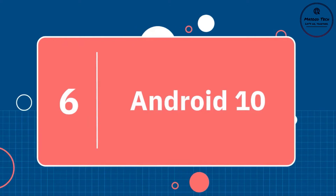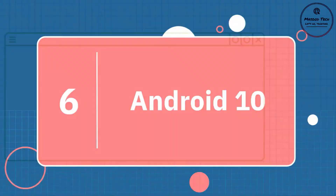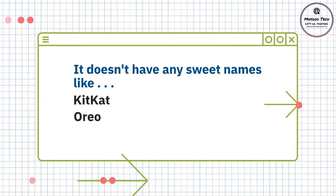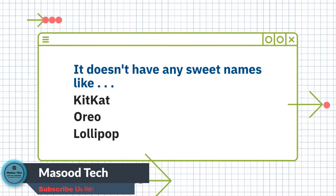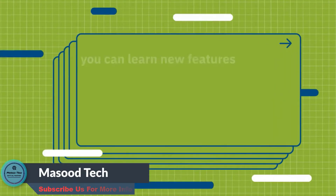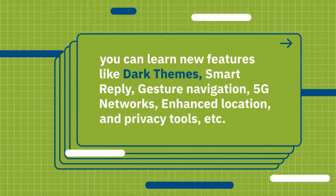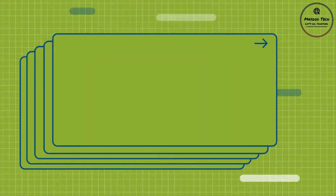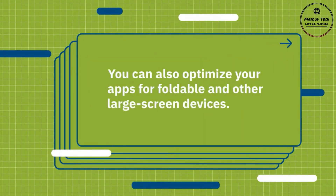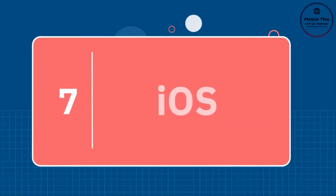Number six: Android 10. This is the latest version of the Android platform, released in September of last year. Unlike previous Android versions, it doesn't have a sweet name like KitKat, Oreo, or Lollipop. If you are interested in the Android platform or are already an Android developer, you can learn Android 10 to explore new features like dark themes, smart reply, gesture navigation, 5G networks, and enhanced location and privacy tools. You can also optimize your apps for foldable and other large-screen devices.